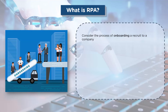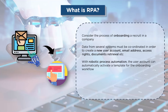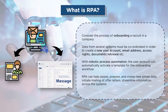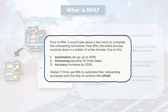To give you a better understanding, consider the onboarding of a recruit into an IT company. Data collection is a crucial part of the process — a new user account, email address, and access rights are generated. With RPA, the user account can automatically activate a template for the onboarding workflow. RPA can assess, prepare, create new joiner data, initiate mailing of offer letters, and streamline information across systems — tasks that previously required hours can now be done in seconds. Stats show RPA automation accuracy can be increased to 100% and processing speed made 10 times faster. Tools like UiPath and Blue Prism are now being deployed at top IT firms.